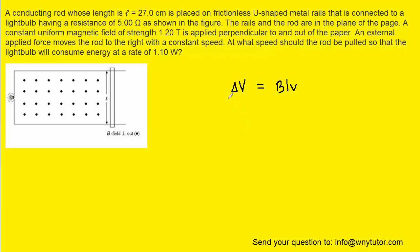According to Motional EMF, we know that the potential difference across the conducting rod is equal to the product of the magnetic field, the length of the rod, and the speed at which the rod is moving.